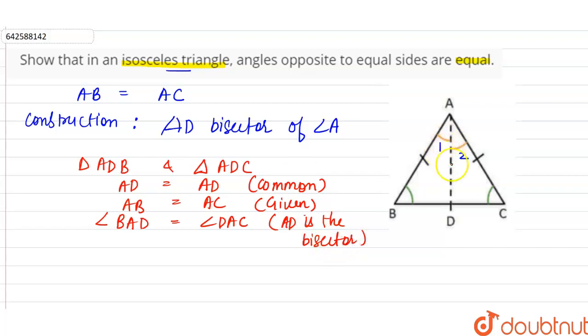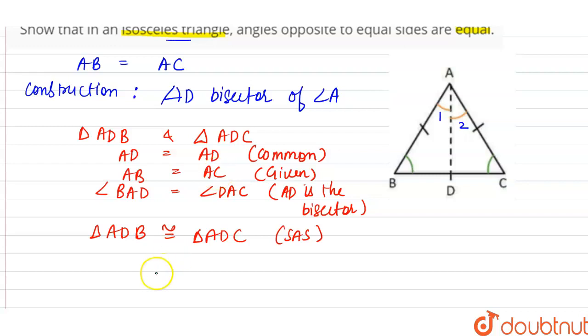So we can say by SAS criteria, these two triangles, triangle ADB is congruent to triangle ADC by SAS congruence criteria. Now we know that if two triangles are congruent, their corresponding parts are also equal. We can say that angle ABD is equal to angle ACD, reason by CPCT, corresponding parts of congruent triangles.